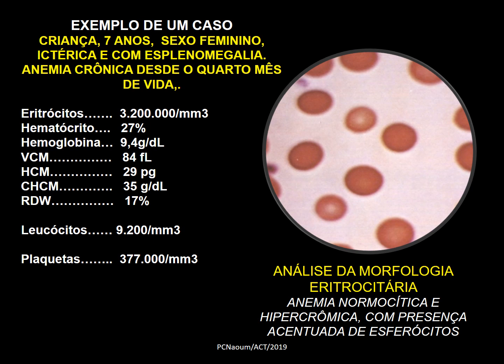Vou dar um exemplo de um caso: uma criança de 7 anos, sexo feminino, ictérica e com esplenomegalia. Anemia crônica desde o quarto mês de vida, quando os pais perceberam que a criança tinha palidez. Nesta situação, temos este eritrograma, além dos leucócitos totais e das plaquetas totais. Na foto da direita, um campo microscópico onde a maioria dos eritrócitos são esferócitos.